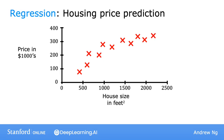Let's dive more deeply into one specific example. Say you want to predict housing prices based on the size of a house. You've collected some data and plotted it. Here on the horizontal axis is the size of the house in square feet — I live in the United States where we still use square feet, though most of the world uses square meters. And here on the vertical axis is the price of the house in thousands of dollars.